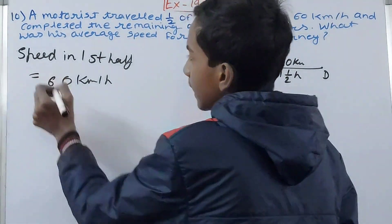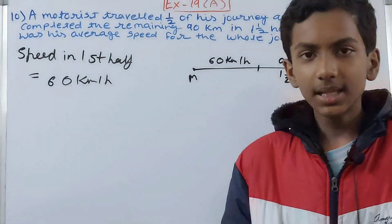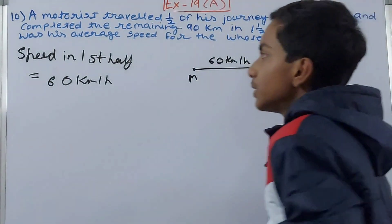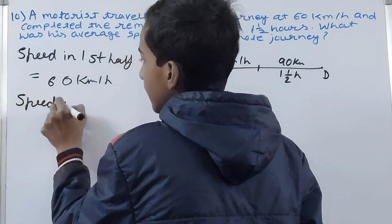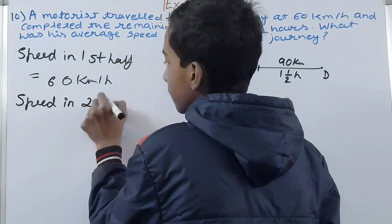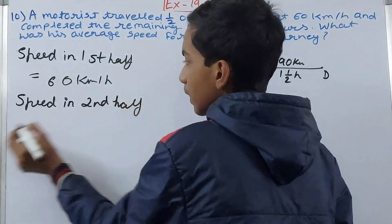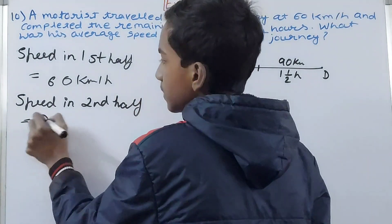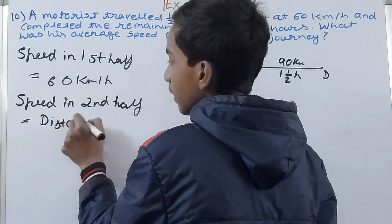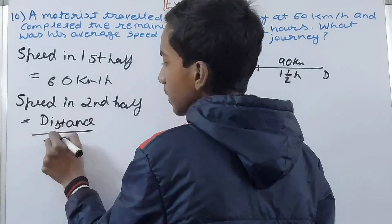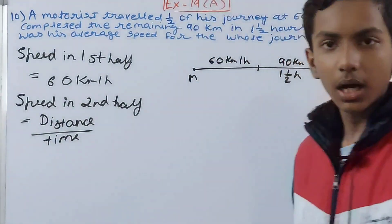Now the speed in the second half equals distance upon time. The speed isn't given but we can find it out. How? See, distance is given - 90 kilometers. Time is also given - one and a half hours.